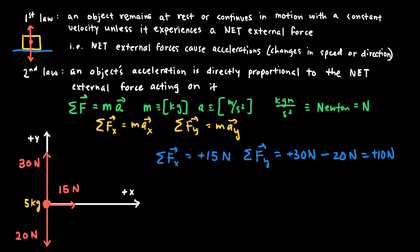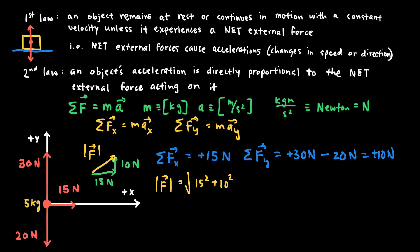To find the total net force magnitude, I take the x and y components, square them, add them, and take the square root — this is the hypotenuse of the force triangle. The x component is 15 newtons and the y component is 10 newtons, so the magnitude of the net force is the square root of 15 squared plus 10 squared, which is about 18 newtons.